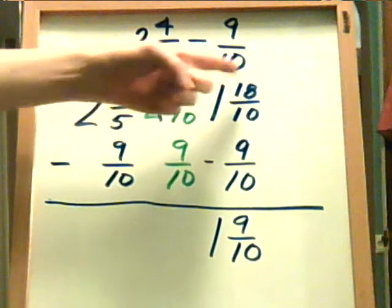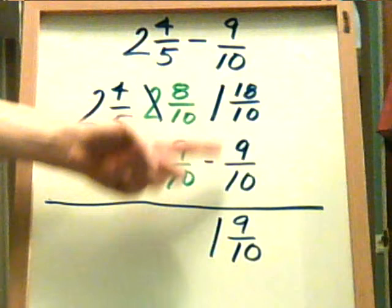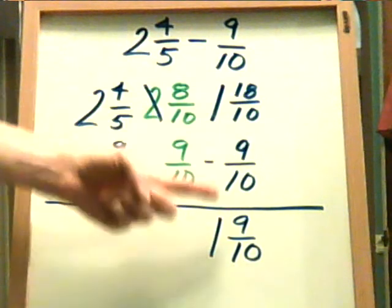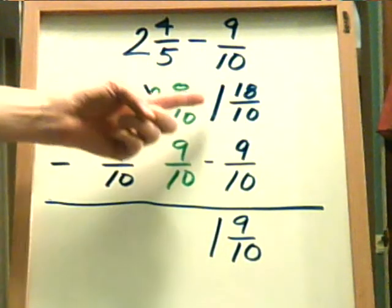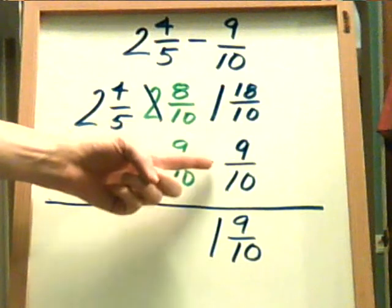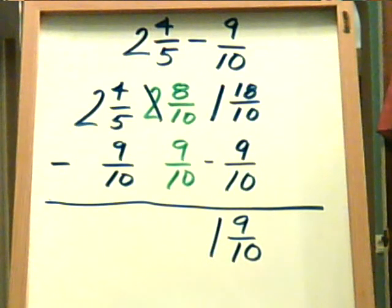At any rate, now you have 1 and 18 tenths minus 9 tenths. Now you can subtract 18 minus 9 is 9 tenths. And we have 1 minus nothing is 1. So the answer is 1 and 9 tenths.